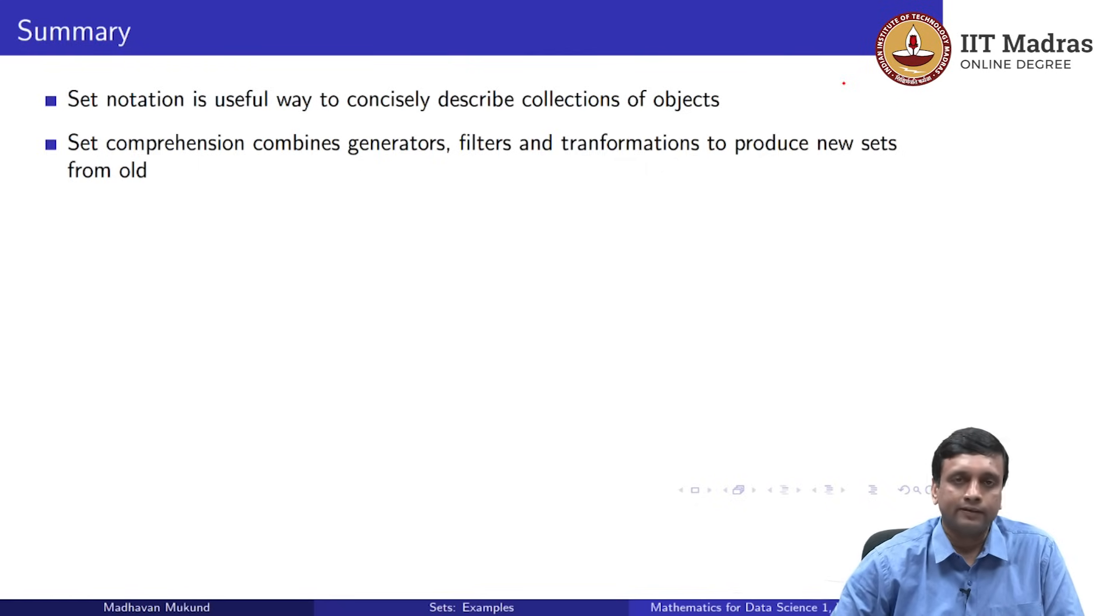Remember that set comprehension has three parts, some of which may not be used. You always have a generator, a basic set from which you are creating new sets. You may have a filter which takes out some elements from the generated set and throws them away and keeps only those that satisfy the condition. And finally, you may have a transformation which takes these filtered elements and does something to make them into the elements that you want, for example, the squares of the even numbers.